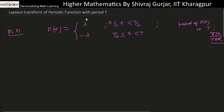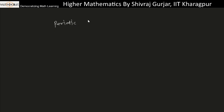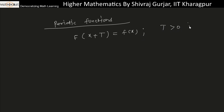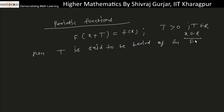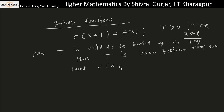Laplace transform of periodic functions. A function f(x) is called a periodic function when f(x + T) equals f(x), where T is a positive real number and x is also real. Then T is said to be the period of the function f(x). Here T is the least positive real number such that f(x + T) equals f(x).